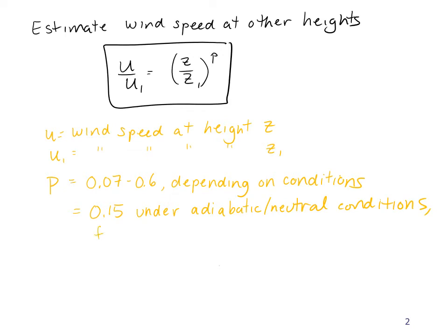When you have few surface features, so like a field or over water, and when you have buildings and trees and things, the values are a bit different and you can look those up.